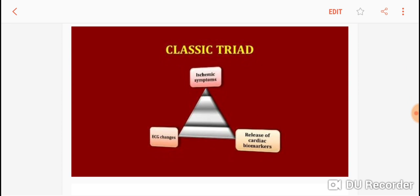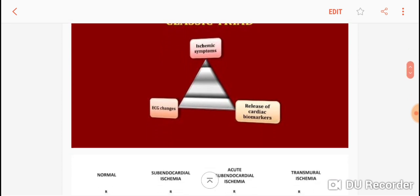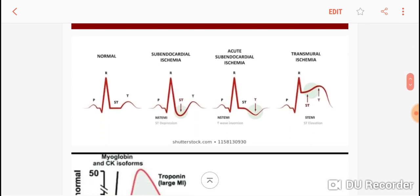How do you differentiate between unstable angina and NSTEMI? An NSTEMI will have release of cardiac biomarkers with either ischemic symptoms or ECG changes, whereas unstable angina will have ECG changes or ischemic symptoms but will not have release of cardiac biomarkers. So release of cardiac biomarkers is very important.